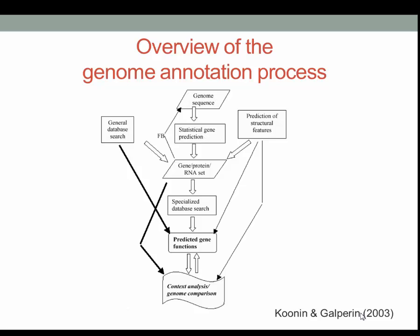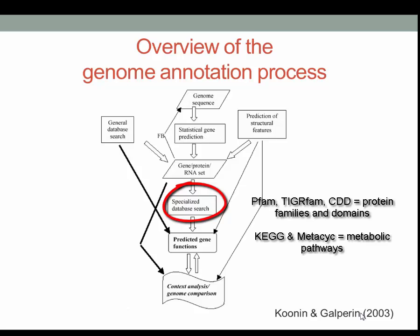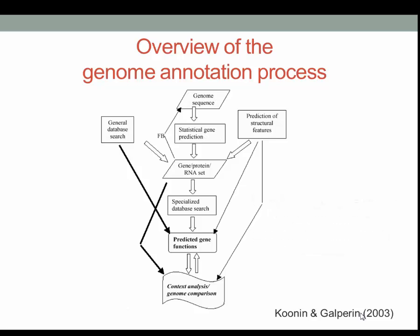Specialized databases are then searched, including PFAM, CDD, COGS, and TIGRFAM. Metabolic databases such as KEGG and MetaCyc can all add information to an annotation. Don't worry — you'll become more familiar with the alphabet soup of acronyms used in gene annotation over time. Finally, genome context analysis and functional predictions are made.